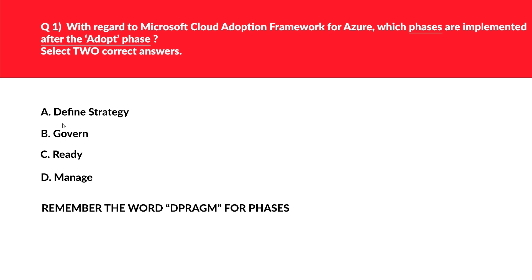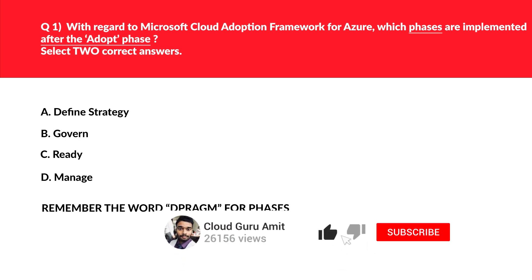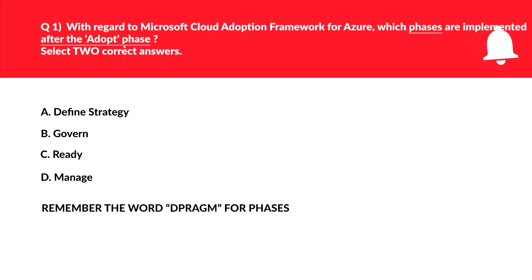Let's look at option A, that is Define Strategy. If you look at the word 'diaphragm,' Define Strategy fits here — the letter D — as it's the first phase and also before the Adopt phase. As per the question, we need answers after the Adopt phase. Hence this option seems to be incorrect.